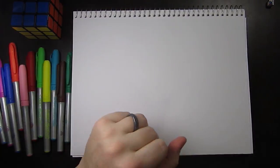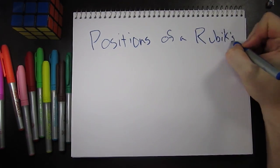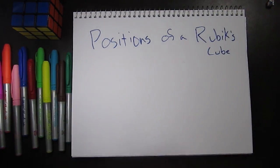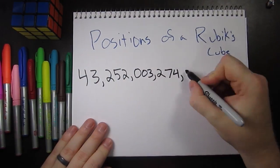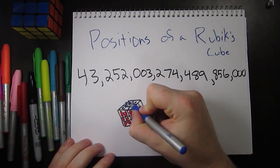Last time we looked at how many possible positions or permutations a Rubik's Cube could be twisted. We found out that the answer is 43 quintillion. We also found that 43 quintillion is quite large.